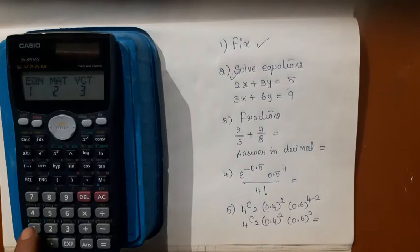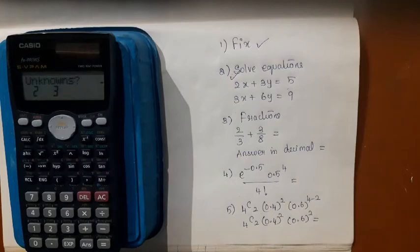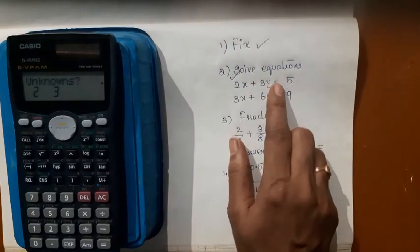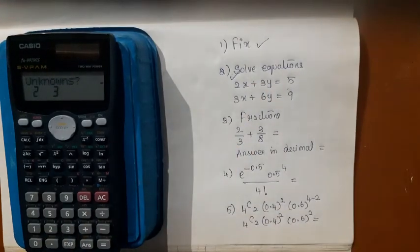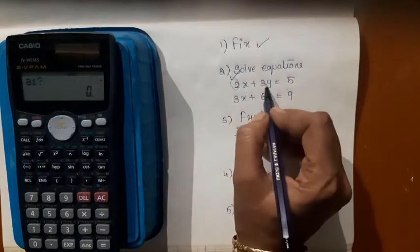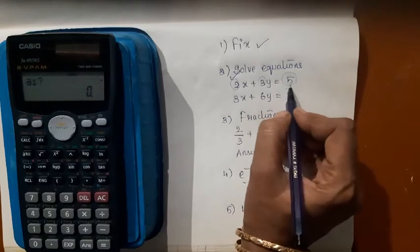Go to that equation mode, press one. Now it is asking you to type the number of unknowns. The number of unknowns here is two, right? So I say two. It is asking me how many unknowns are there, two or three? Tell two.